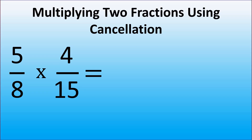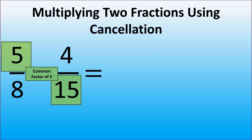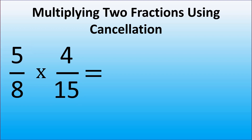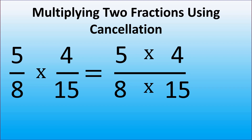Ready to check the answer? When simplifying fractions, we divide the numerator and the denominator by a common factor. Here, 5 and 15 have a common factor of 5, and 4 and 8 have a common factor of 4. To multiply fractions, we multiply the numerator by the numerator and the denominator by the denominator. So here we have 5 times 4 in the numerator and 8 times 15 in the denominator. Because 15 times 8 is the same as 8 times 15, we can rewrite the denominator as 15 times 8.